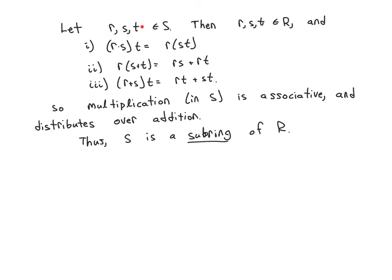So we only need to check the other ring axioms. Let's take three elements in S. Then those three elements happen to also be in R. These are the other conditions you need to check, associativity of multiplication and the distributive laws. Notice these three equalities are all true because these are elements in R and R is a ring. So multiplication in S is actually associative and distributes over addition.